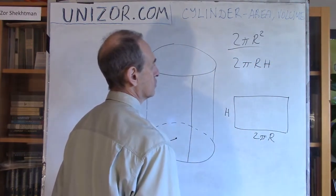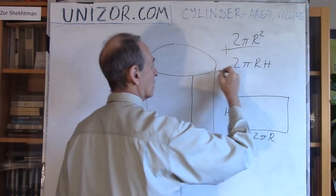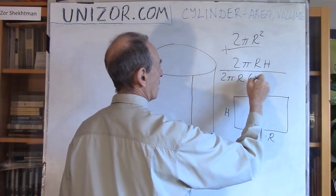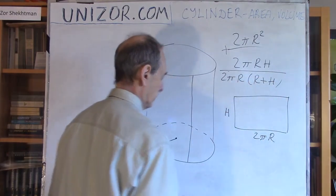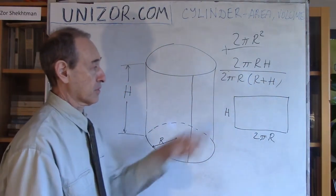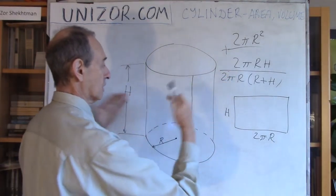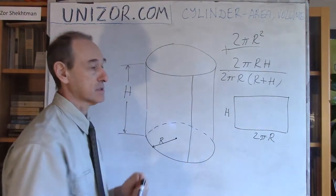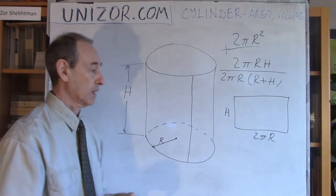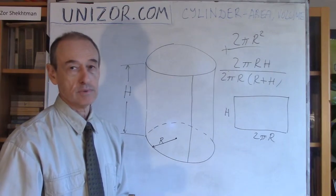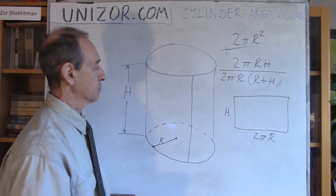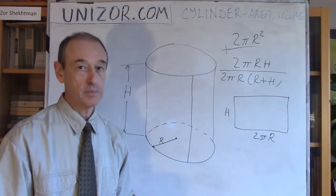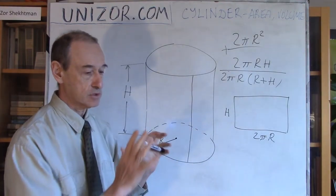Adding the side surface and the two bases together, we get the full surface area of a cylinder, which you can factor as 2πr(r + h). I don't want you to memorize this formula. What I want you to remember is that you can cut the cylinder, convert the side surface into a rectangle, then add the two base areas — and that's it. I can derive it in about a minute.